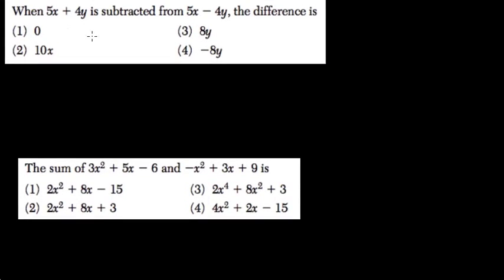When 5x plus 4y is subtracted from 5x minus 4y, what the difference is — or the result is — so 5x minus 4y, and then we're subtracting 5x plus 4y from that.